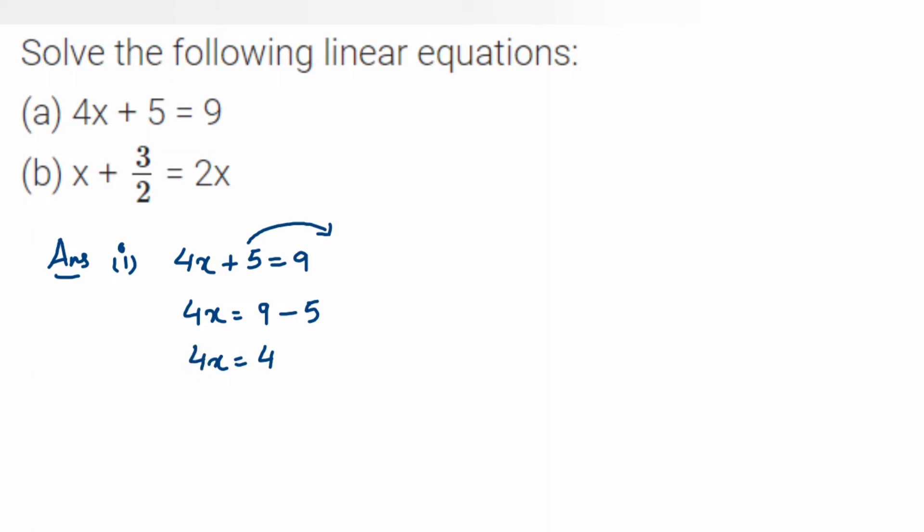If you see here, 4x is nothing but 4 into x. So when we transpose 4 to the other side, it comes in division. Multiplication when transposed comes in division. So from here, x is equal to 4 upon 4, which is equal to 1. We can cancel this now.